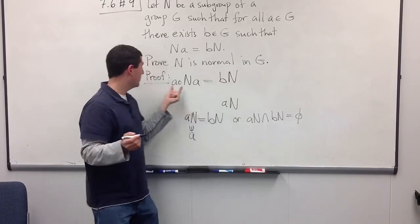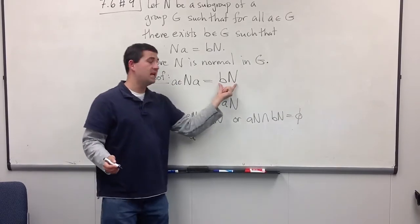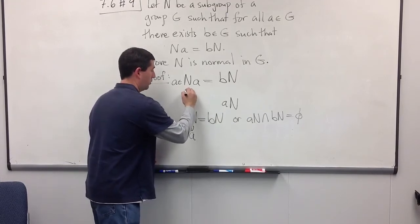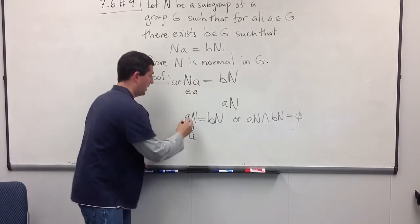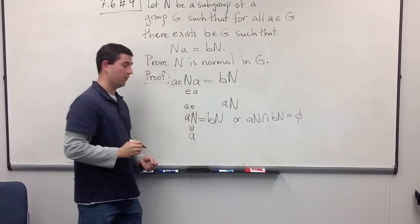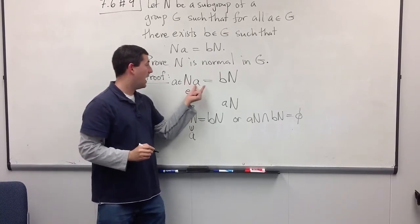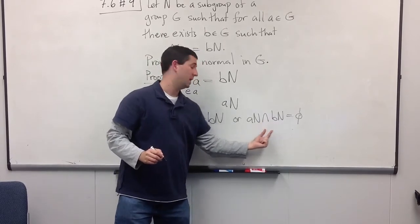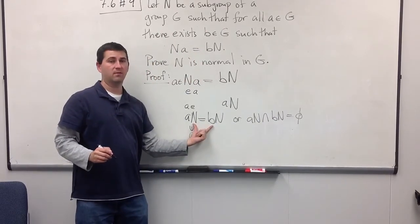And voila! We've just found an element A which is in BN and which is in AN. A is equal to E times A up here, it's equal to A times E down here. But since NA is equal to BN, A is also in BN, so AN intersect BN is not empty, and so they must in fact be equal.